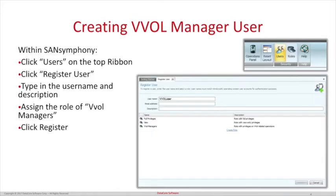Once the Windows accounts are created, you must create a VVOL manager user within SAN Symphony. Once SAN Symphony is loaded, click the Users button located on the top right of the ribbon. Click Register User. Type in the username that you created within Windows, assign it the role of VVOL Manager, and click Register.